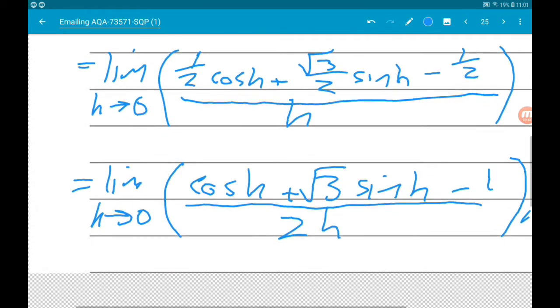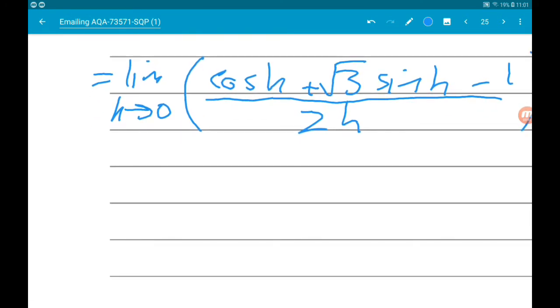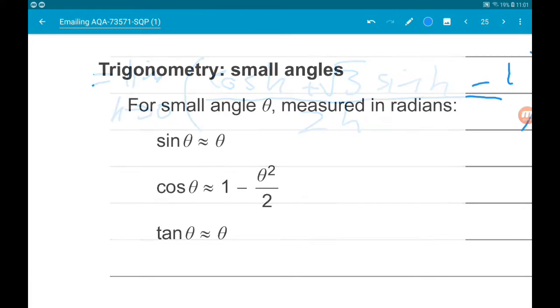Right, now at this point we are at a bit of a crossroads. There are a few different methods that we could use. I think the easiest would now be thinking of the small angle formulas for trigonometry, the ones that we saw earlier in the paper. They are in your formula sheet, and if I'm clever enough, they are on screen right now.